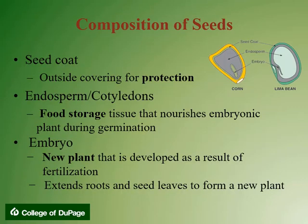The basic parts of a seed are the seed coat, the endosperm, which is stored plant food, and the embryo. The seed coat is the outside covering of the seed that protects the embryo plant and makes it possible for seeds to be transported and stored for long periods of time. The endosperm is the food storage tissue that nourishes the embryonic plant during germination, or the first start of growth in the seed. The embryo is a new plant developed as a result of fertilization. During germination, it extends its root and seed leaves to form a new plant.